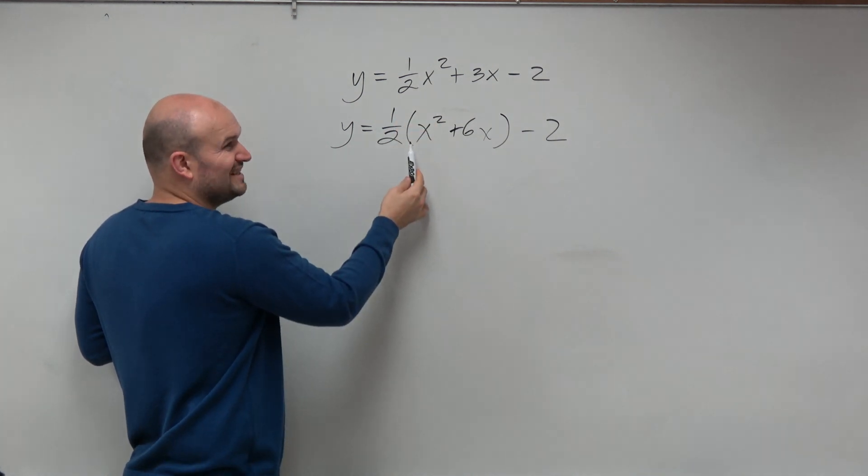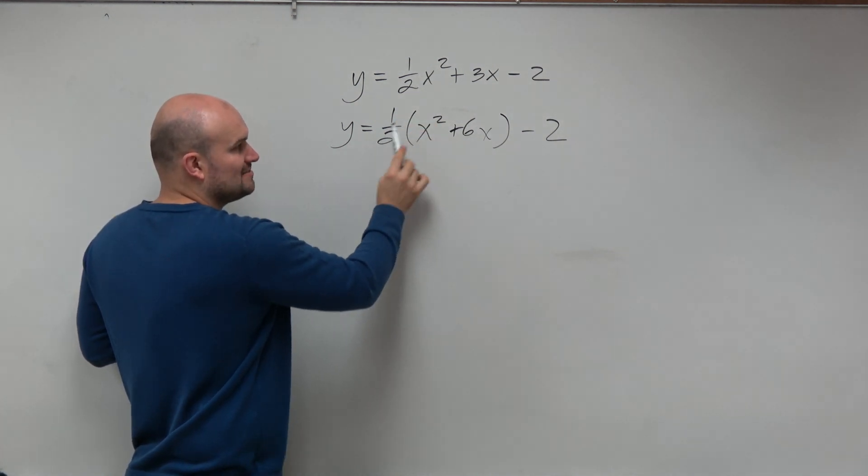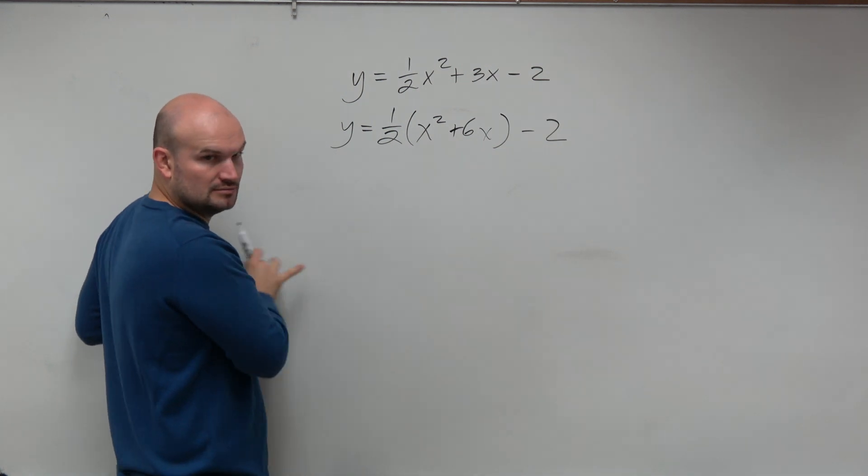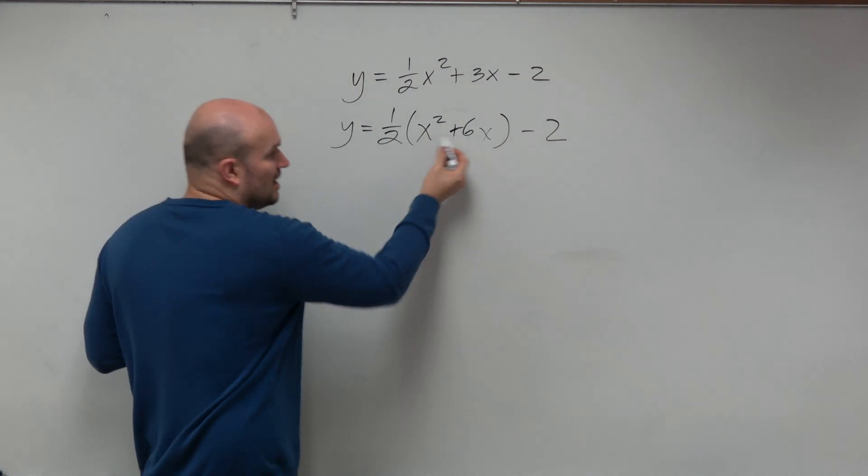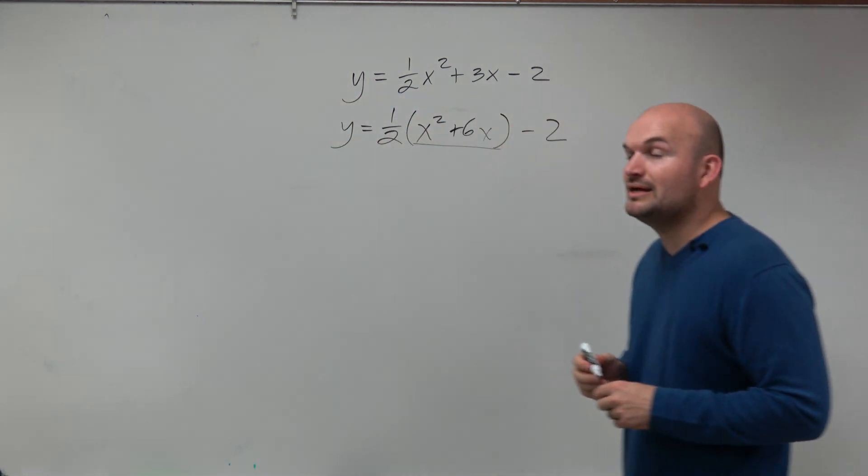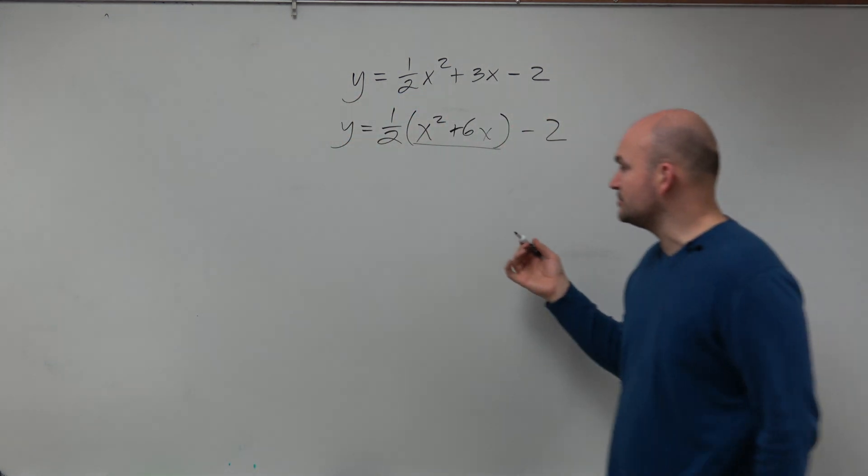And again, guys, I didn't change this problem. These two are equivalent. Like you multiply 1 half times these two terms, and you're good to go, right? I didn't change that. I just changed the format. But now we have this. Now what we inside the parentheses, we want to create a perfect square trinomial.